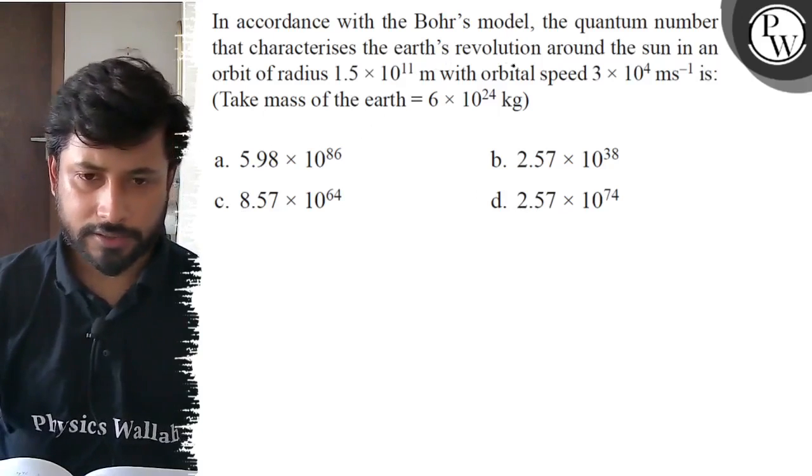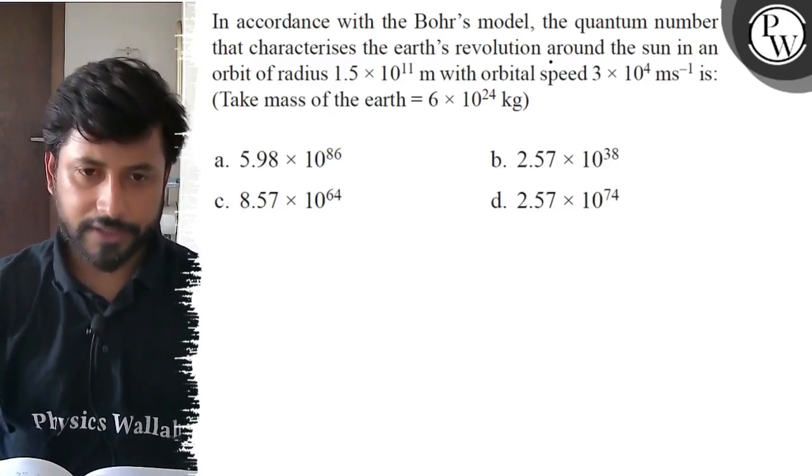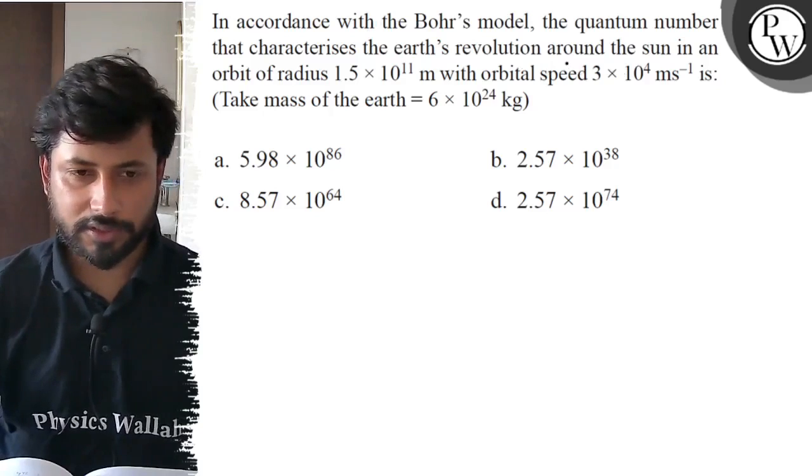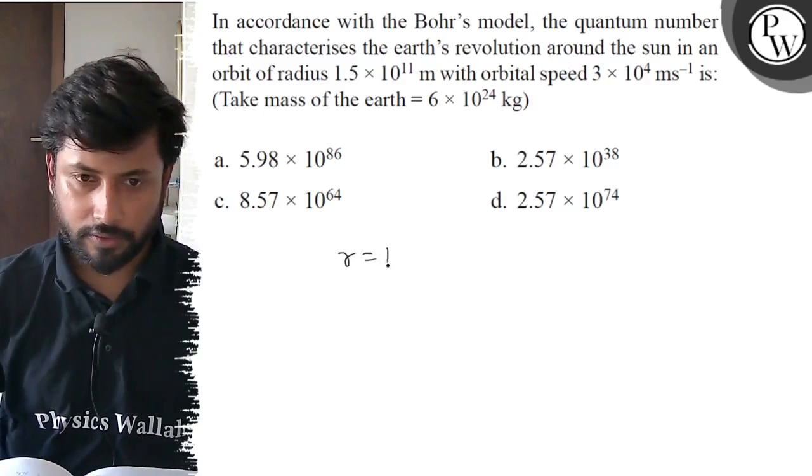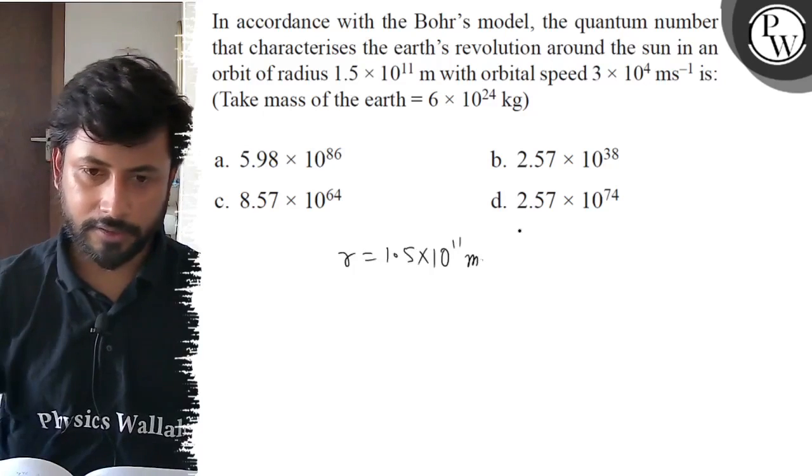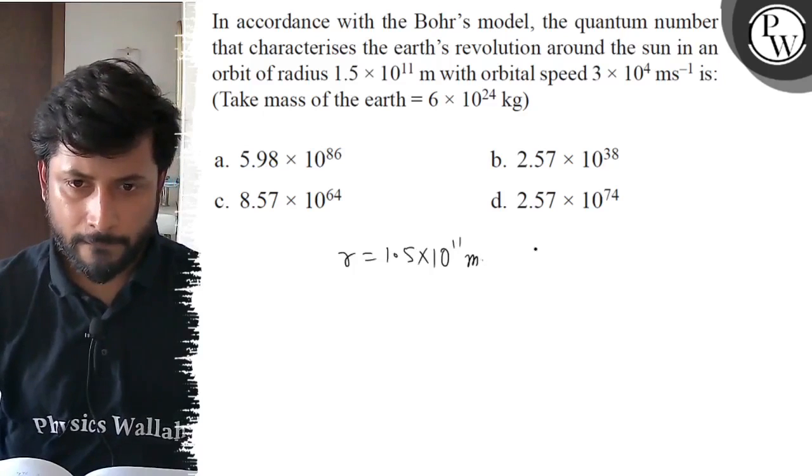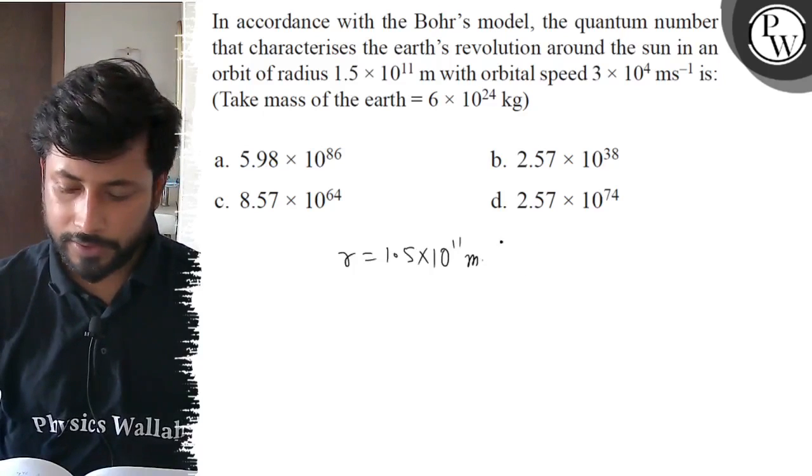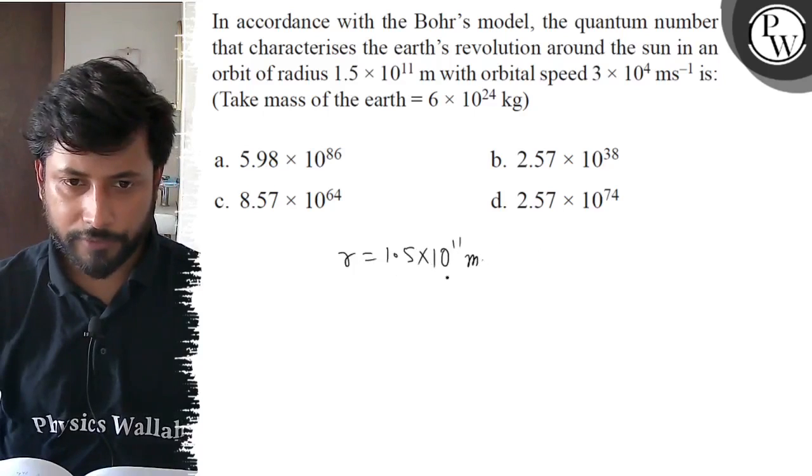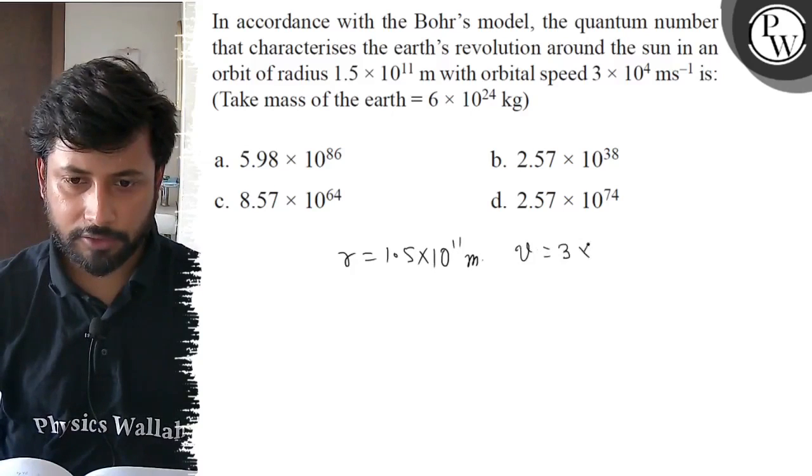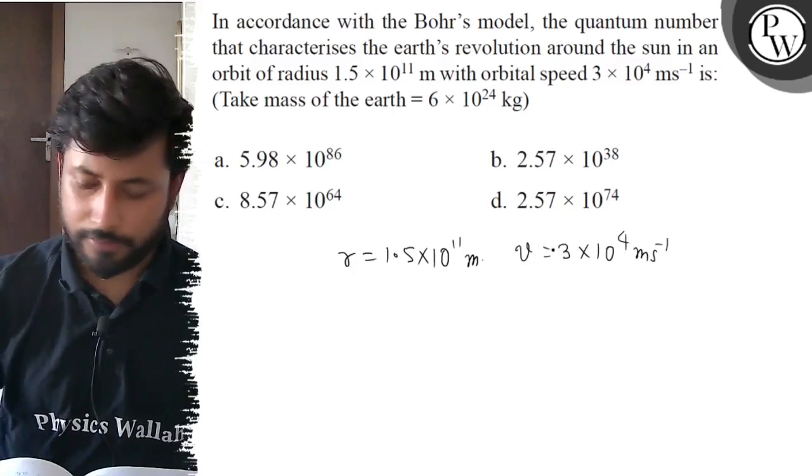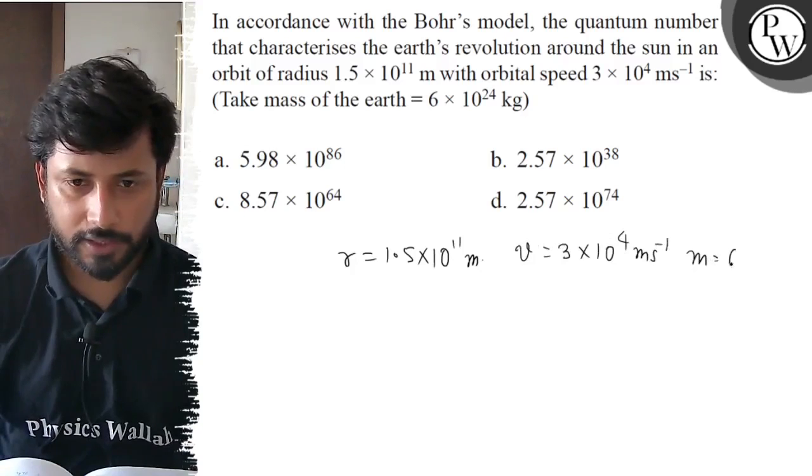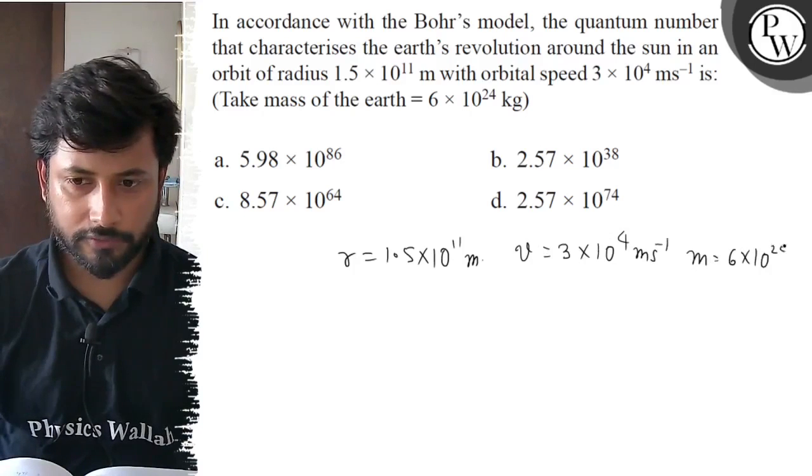The Earth's revolution, the quantum number that characterizes the Earth's revolution around the sun in an orbit of radius. Take radius r = 1.5 × 10^11 meter. Speed v = 3 × 10^4 meter per second. And mass of Earth m = 6 × 10^24 kg. And quantum number is n.